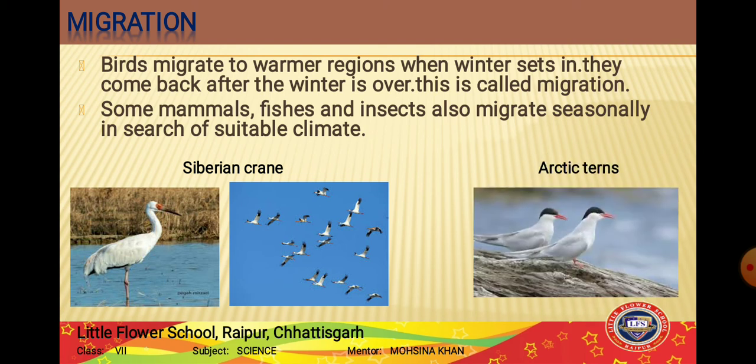There is another bird called the Arctic tern. Arctic terns fly all the way from the Arctic region to Antarctica and return to the Arctic when it is summer, covering a distance of about 35,000 km. It is a mystery how these birds travel to the same place every year.